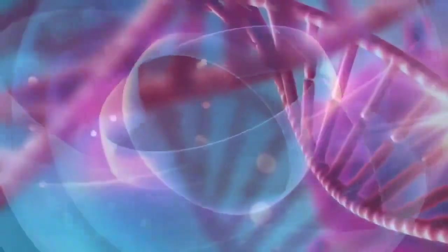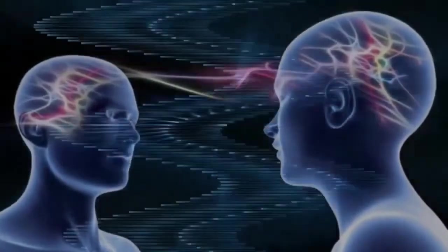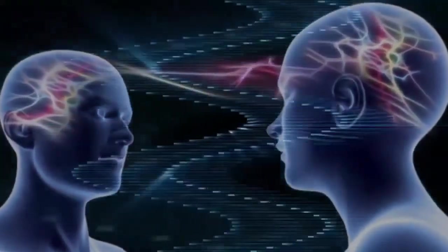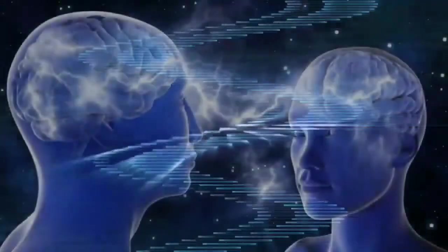We become like those we surround ourselves with. A mirror neuron is a neuron that fires both when an animal acts and when the animal observes the same action performed by another. Mirror neurons allow us to learn through imitation.